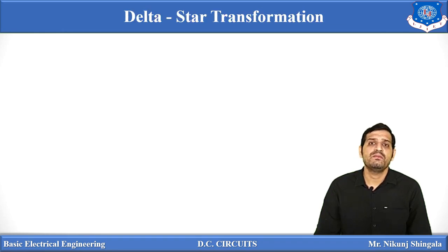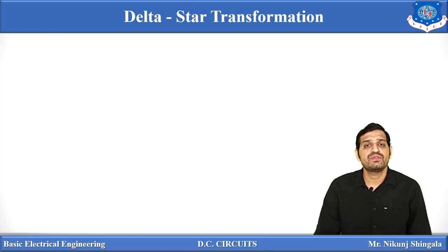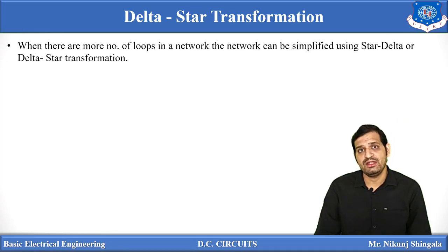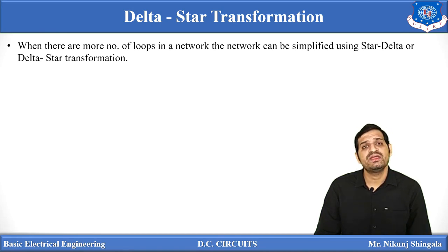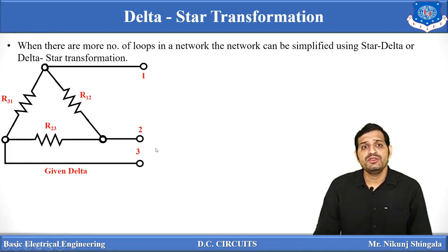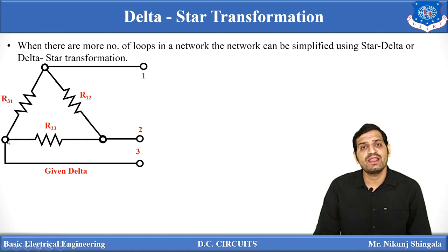We have already discussed about the series and parallel connection of resistances, which are used to simplify a given network. But when there are more number of loops in the given network, the circuit can be easily simplified using delta-star transformation and star-to-delta transformation. Here you can see three resistances connected in such a way that they form the Greek symbol delta, which is why it is known as delta-connected resistance.